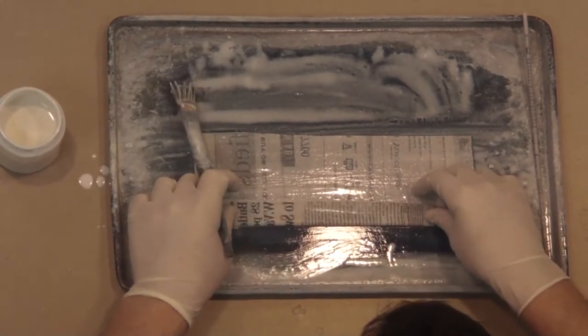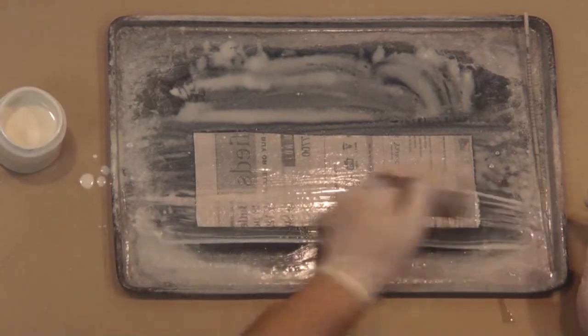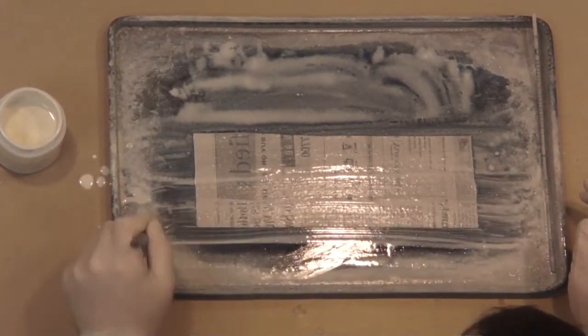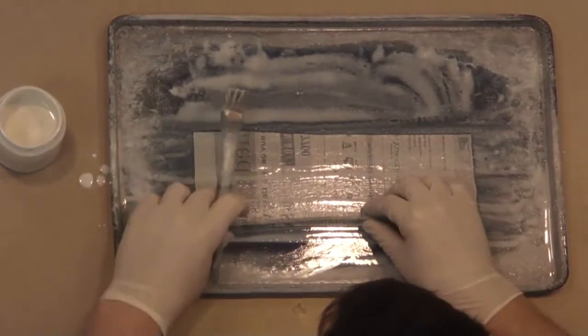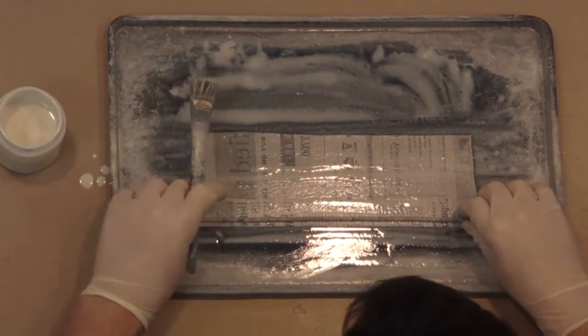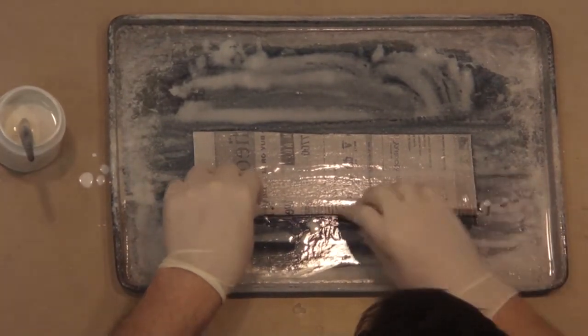Fold the leading edge up just as you did for the first layer. Now put your strip on top of the folded leading edge. Gently wrap the newsprint around the strip and begin rolling again.